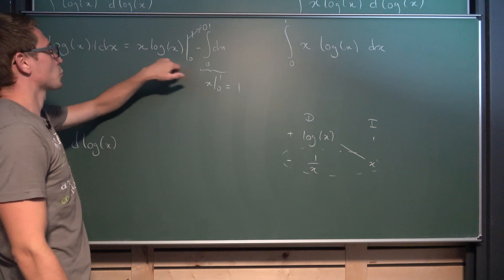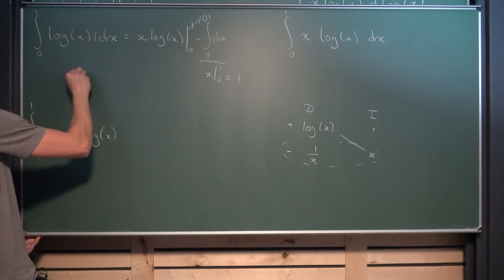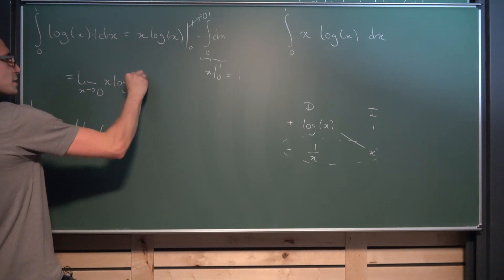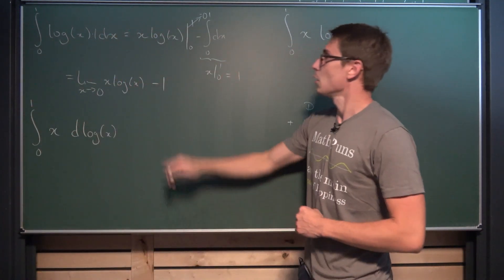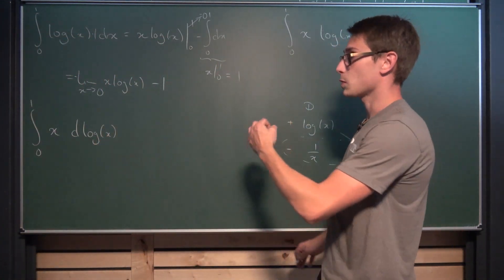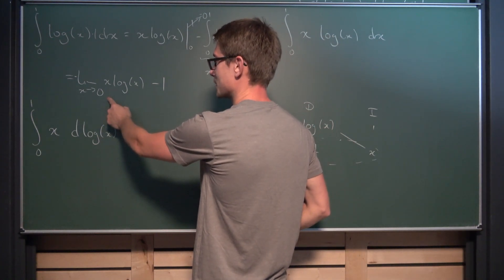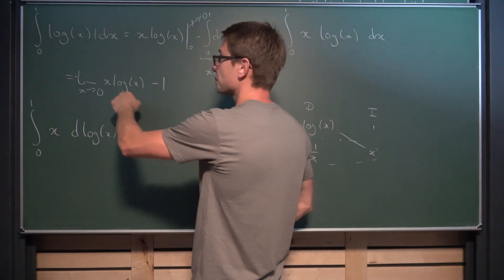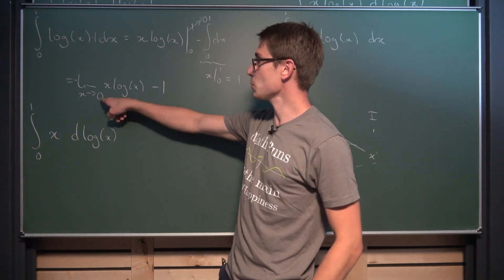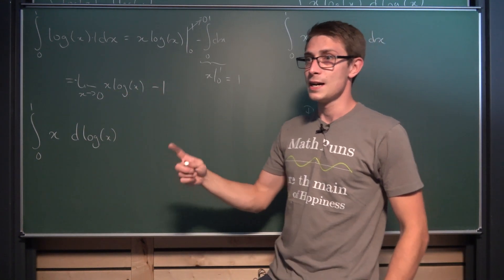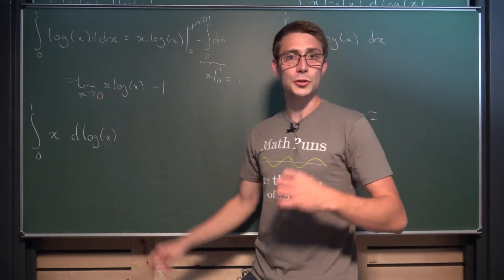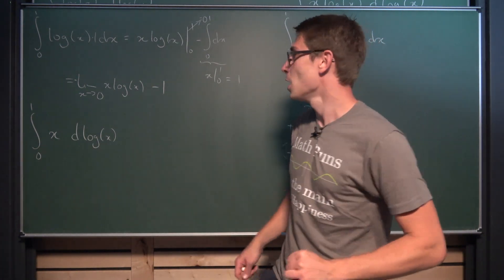Now we look at the upper and lower bounds. At x=1, we get 1·ln(1) = 1·0 = 0. The tricky part is the limit as x approaches 0 of x·ln(x), since plugging in 0 gives 0 times negative infinity, which isn't good. So we rewrite using L'Hôpital — the sledgehammer method of limits — putting x into the denominator as ln(x) divided by 1/x.